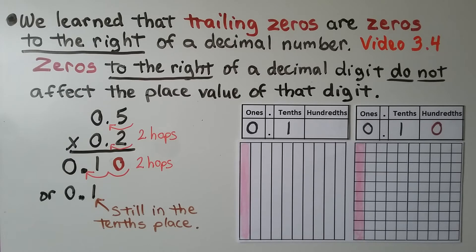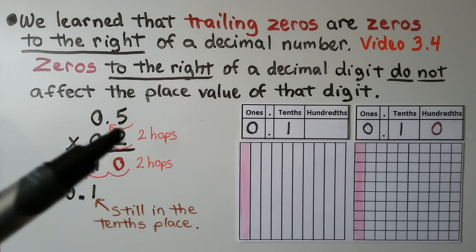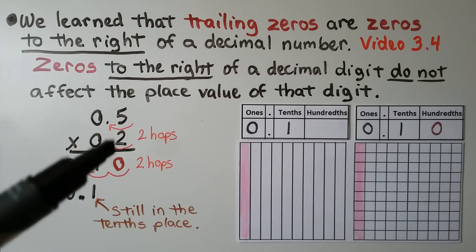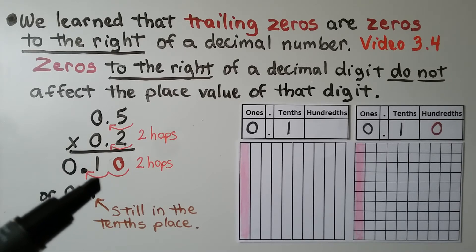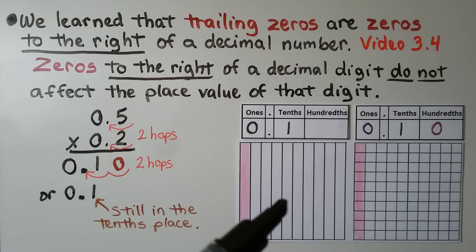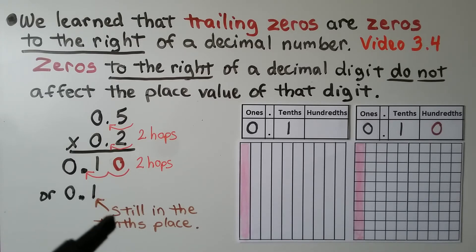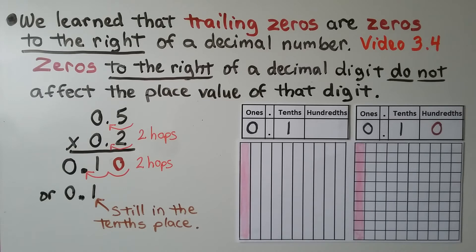We learned that trailing zeros are zeros to the right of a decimal number — we learned about that in video 3.4, which is linked in the description. Zeros to the right of a decimal digit do not affect the place value of that digit. We have 5 tenths times 2 tenths. We have 2 decimal place value hops. 2 times 5 is 10. We put 2 hops into the product. We can say it's 10 hundredths or 1 tenth — this 1 is still in the tenths place.